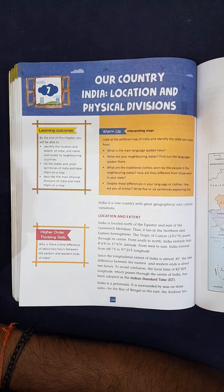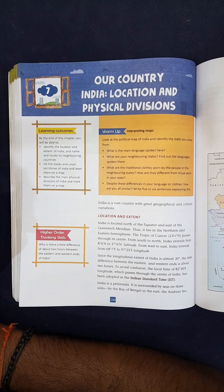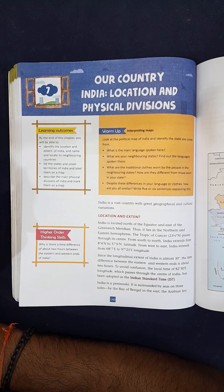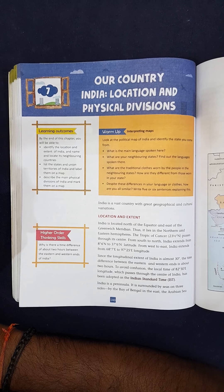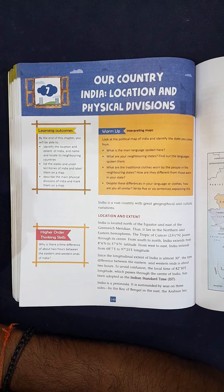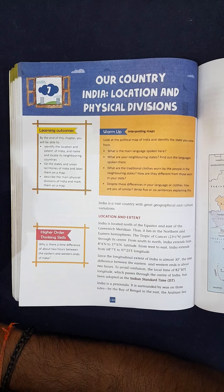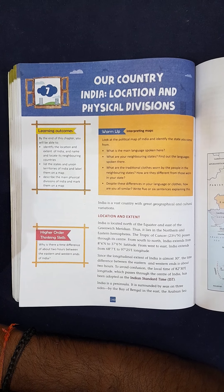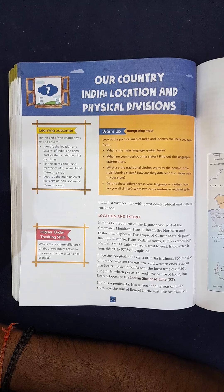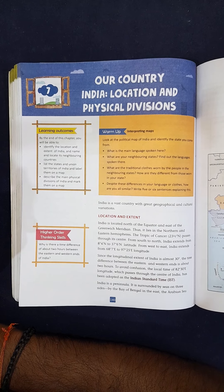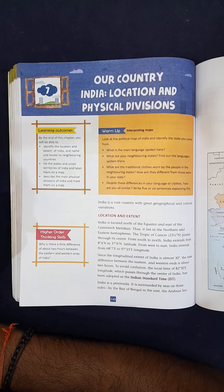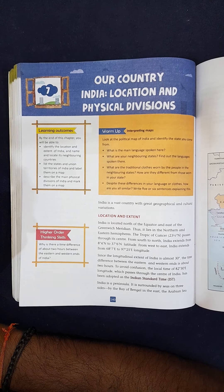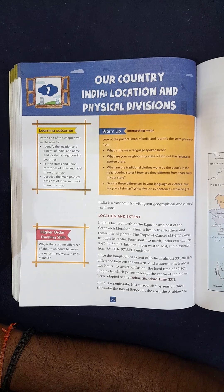From west to east, India extends from 68 degrees 7 minutes east to 97 degrees 25 minutes east longitude. Since the longitudinal extent of India is almost 30 degrees, the time difference between the eastern and western ends is about two hours. To avoid confusion, the local time of 82 degrees 30 minutes east longitude, which passes through the center of India, has been adopted as the Indian Standard Time.